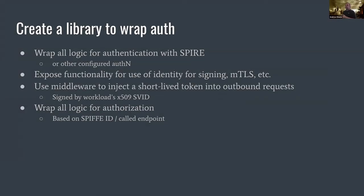Keeping in mind that most services are containerized and we're limited to just a few languages, our solution was to create a library that wraps auth for services — wrapping authentication with the Spire agent or whatever authentication the service has configured, exposing functionality for using whatever identity has been assigned for signing things, performing mTLS, or anything else where it's useful to have an X.509 with an associated private key. This library uses middleware to inject short-lived tokens into outbound requests. Those tokens have the SPIFFE ID of the calling service and are signed by that X.509 SVID. We also wrap all logic for authorization, with decisions made based on the calling SPIFFE ID and the called endpoint.